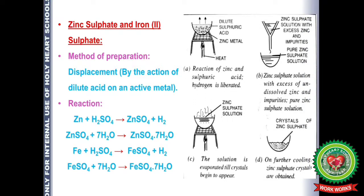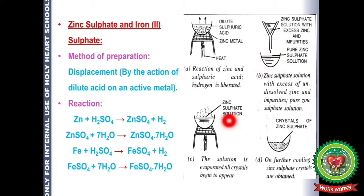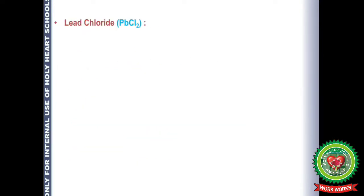For the procedure to form zinc sulfate: in an evaporating dish, take dilute sulfuric acid and zinc metal and heat. Hydrogen gas is liberated and zinc sulfate is formed. Filter out the solution to get pure zinc sulfate solution. Heat and evaporate the solution until crystals begin to appear, then allow to cool. Crystals of zinc sulfate (ZnSO₄·7H₂O) are obtained.